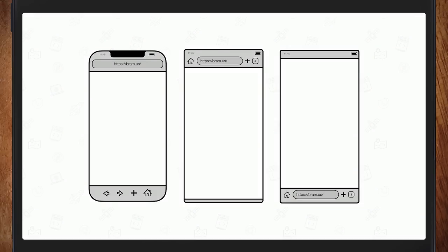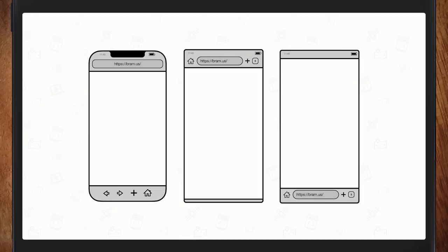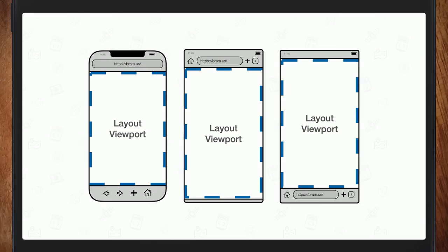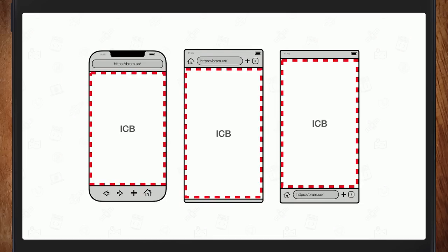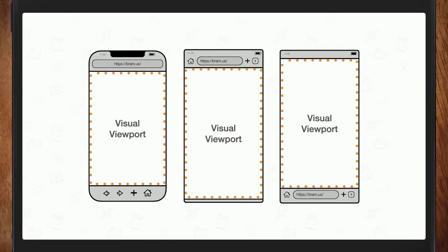On mobile we have Safari on iOS, Chrome on Android, and Firefox. They all have a layout viewport, an ICB the same size as the layout viewport, and a visual viewport for pinch zooming — just like desktop.